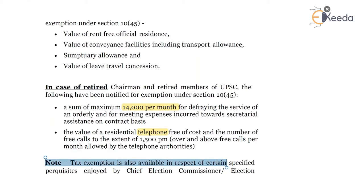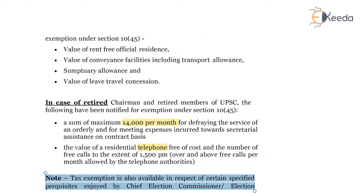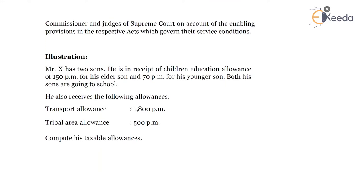Note: tax exemption is also available in respect of certain specified perquisites enjoyed by the chief election commissioner, election commissioner, and judges of the Supreme Court on account of enabling provisions in the respective acts which govern their service conditions. The exemption mentioned under clause 45 of section 10 is over and above the exemption applicable to the chief election commissioner, election commissioner, and judges of the Supreme Court under their respective acts. Exemption under section 10(45) does not affect the exemption mentioned under respective acts — it is over and above those exemptions.